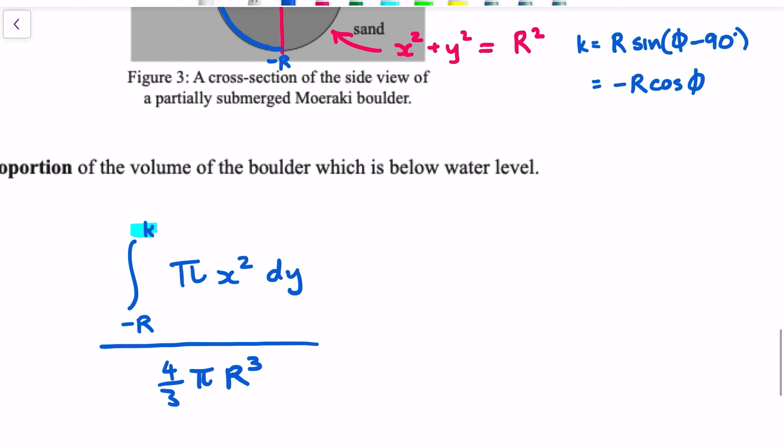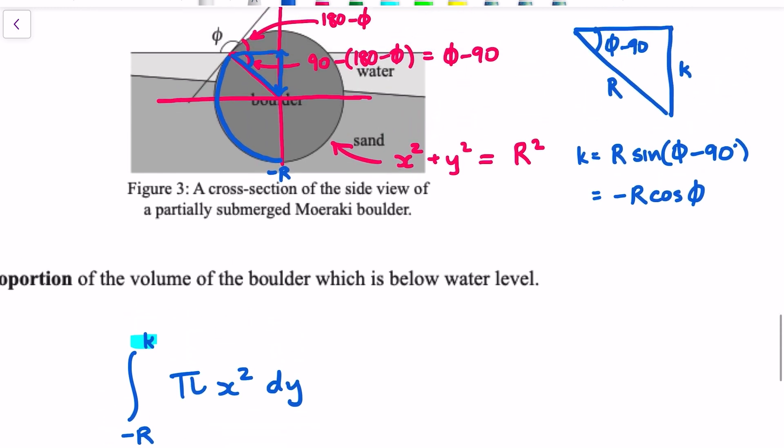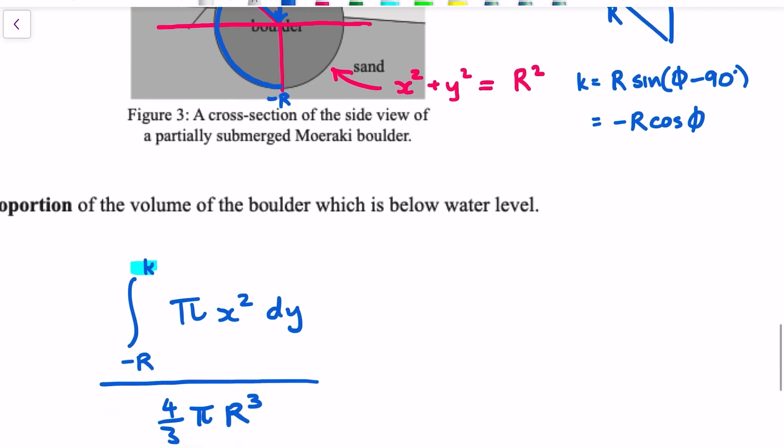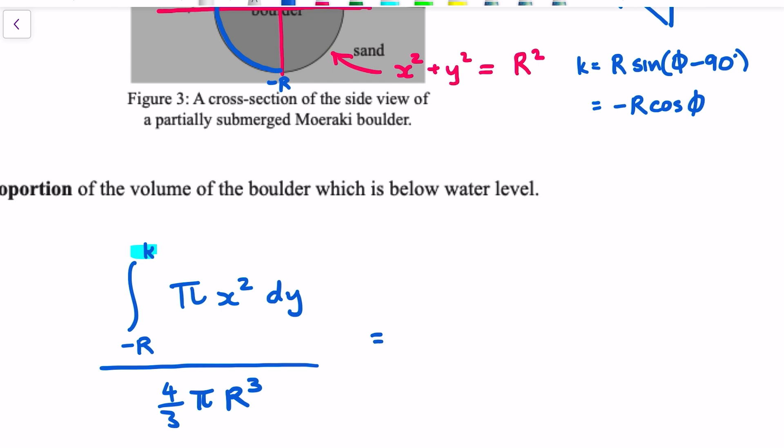And I thought it was really strange when I saw it in the answers, because it seemed weird to have a negative upper limit when we were dealing with a y value above the axis. But in that quadrant, cosine is negative. So -R cos(φ) is a positive number.